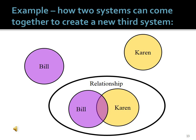Here's an example that has to do with people instead of computers. I can have two separate people who each constitute a separate system — let's say Bill and Karen. Bill and Karen are separate systems, but they get together in some kind of relationship. The two systems are Bill and Karen, but that doesn't negate the fact that Bill and Karen getting together in a relationship forms a third system.